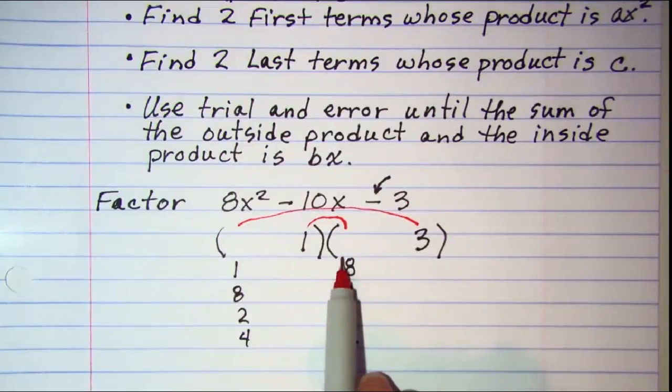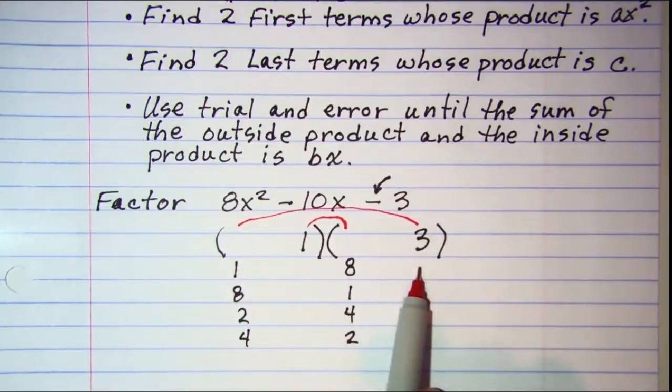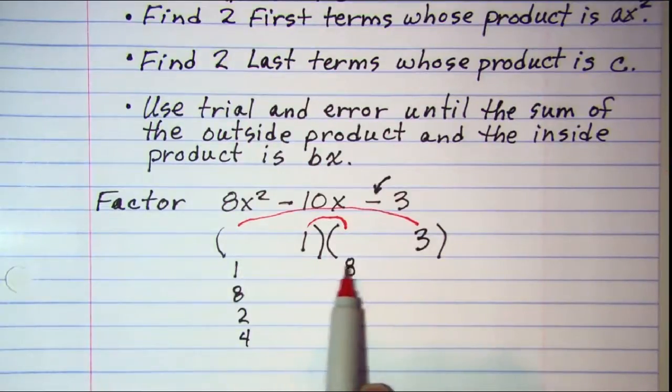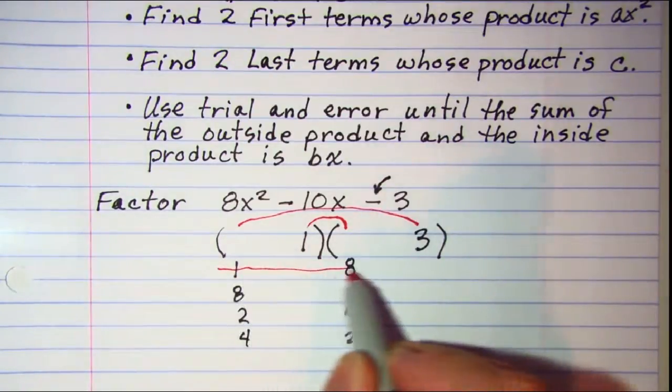And remember I need a difference of 10. With the first choice, my inner product is 1 times 8. My outer product is 1 times 3. The difference is 8 minus 3, which is 5. So this choice does not work.